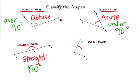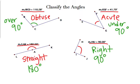This angle measures 90 degrees and is called a right angle. Right angles have to measure exactly 90 degrees. Often on right angles, they'll put a little box inside instead of a curved angle marker to show it's 90 degrees. So those are our four types of angles: obtuse is over 90, acute is under 90, straight is 180, and right is exactly 90.